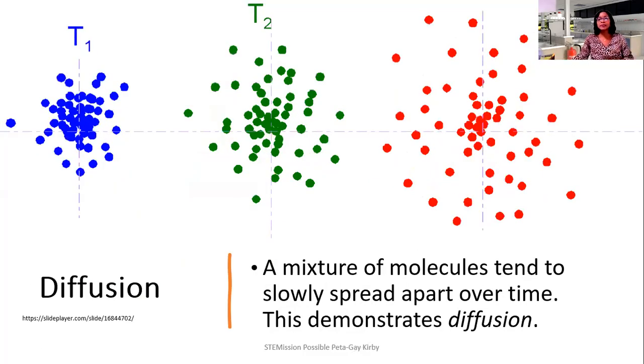Diffusion can be considered as a mixture of molecules that tend to slowly spread apart over time. This is another way to demonstrate diffusion. Time 1, time 2, time 3 can be observed. If you create a grid to observe the spreading of the particles, you will notice that a wider area is being used up for time 2. It's actually measurable.